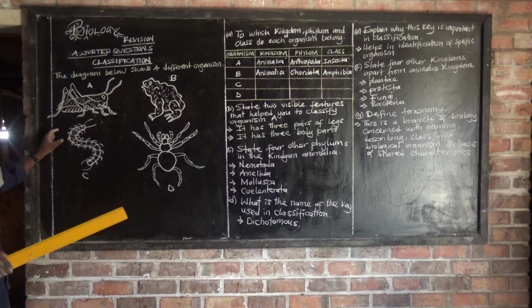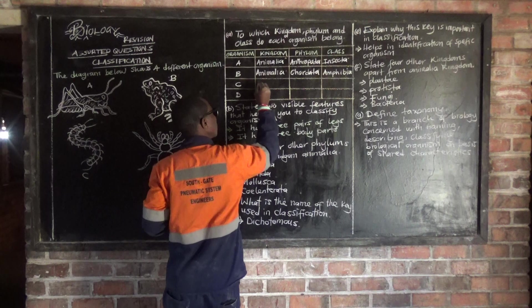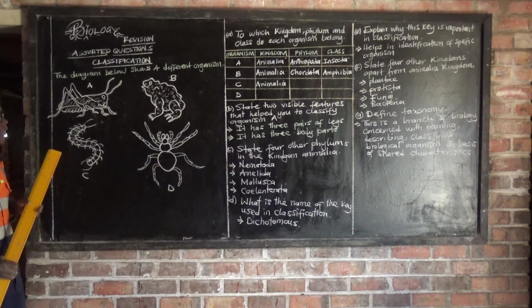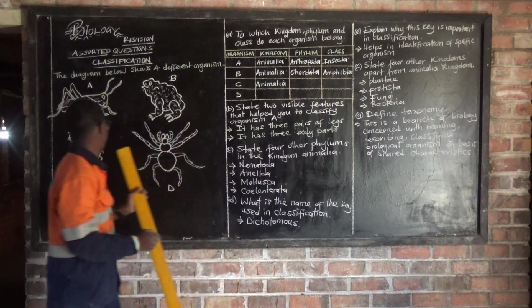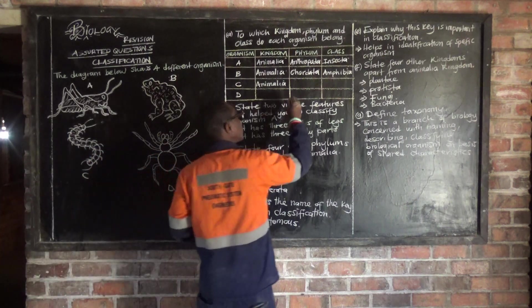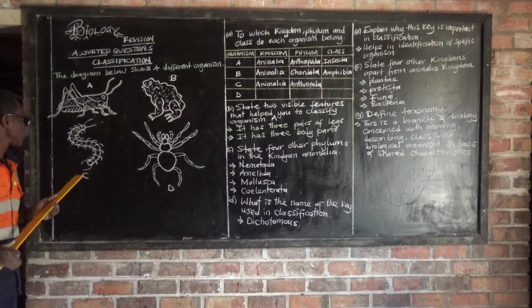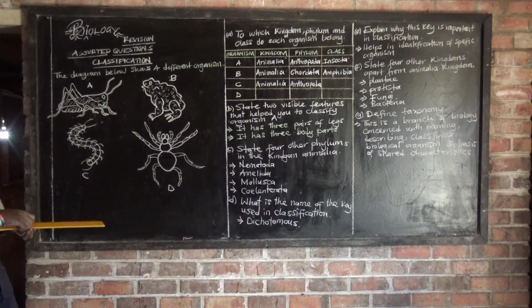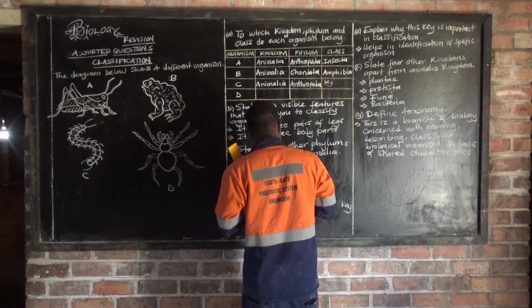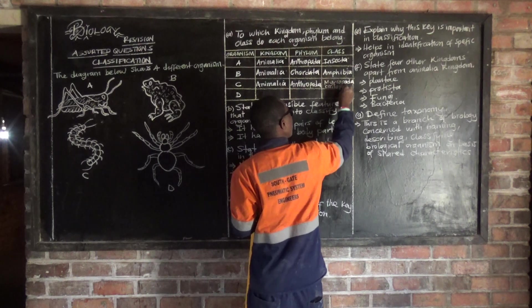Then organism C — we have this one, which is a centipede. So a centipede belongs to which kingdom? The kingdom is Animalia as well. To which phylum does a centipede belong? The phylum is Arthropoda. Then to which class does it belong? The class to which a centipede belongs is called Myriapoda or Chilopoda — you can say Myriapoda, you can say Chilopoda.